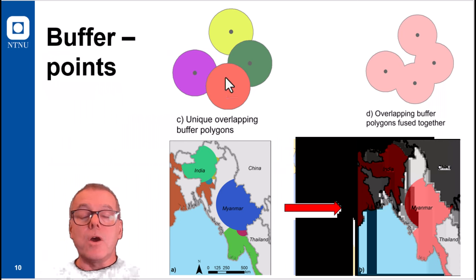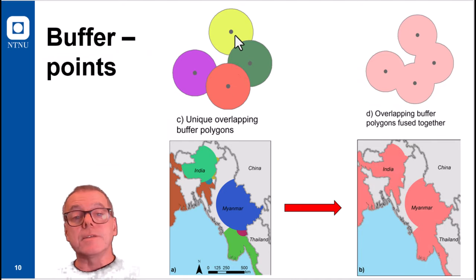Of course, depending on the buffer distances, you may have a result where the buffer is overlapping. So the buffer for each of the objects are so large that they are touching each other or even overlapping each other. And then you may have to take a decision.